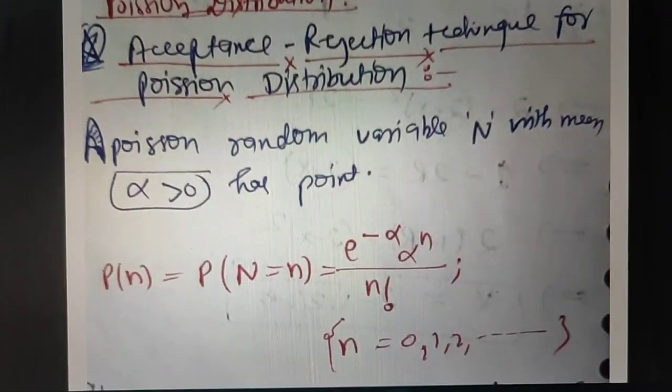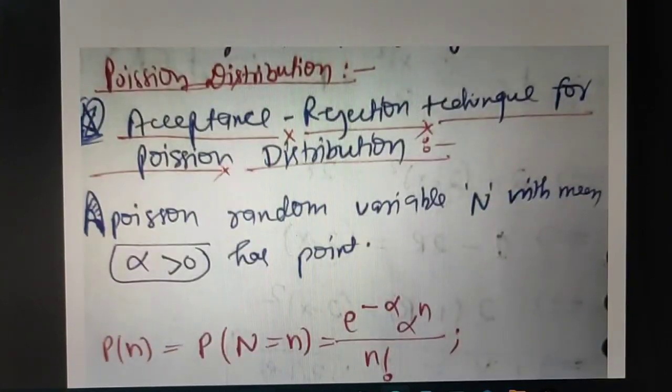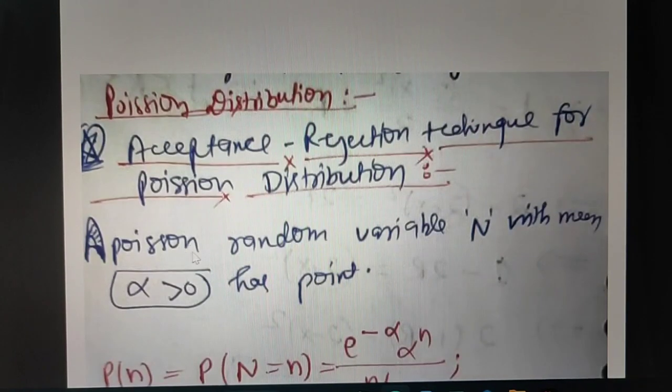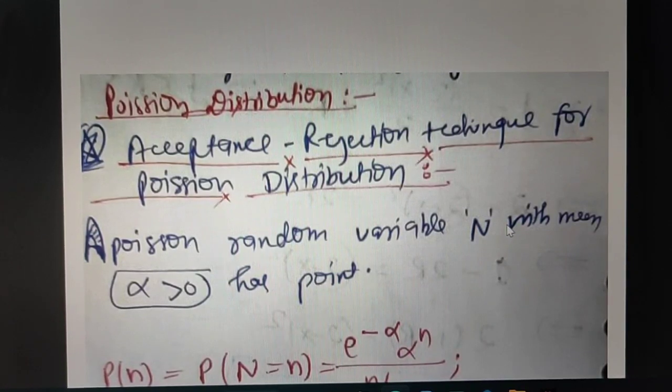Hello guys, now I'm going to discuss Poisson distribution in acceptance detection technique. For that, a limiting condition is that we have to take a random variable N with mean greater than or equal to zero.